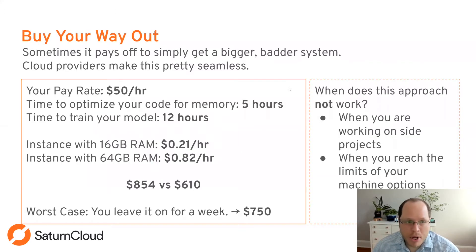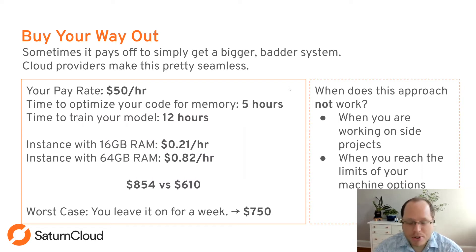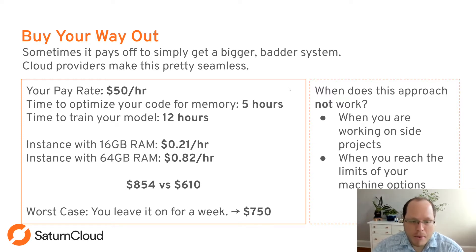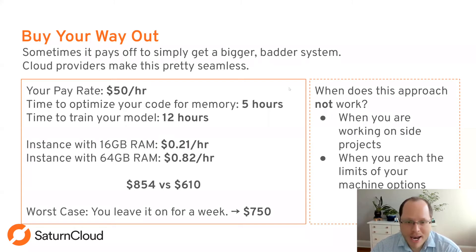The first strategy is buying your way out — simply getting a bigger system. This works really well in cloud computing. Cloud providers like Saturn Cloud make this seamless: you can select a different machine type and go from 16 gigabytes of RAM to 64 gigabytes with little to no downtime. Think about your time as valuable — if you're paid $50 an hour and upgrading costs only 61 cents an hour, spending five hours optimizing code costs your company far more than just scaling up the machine.